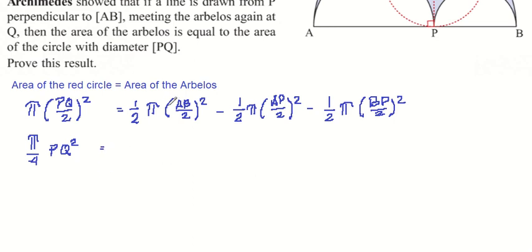I can factor out all the constants here, like ½π and ¼, because this is 2 squared on the denominator. So that's π/2 times ¼. What's left here is AB² minus AP² minus BP².